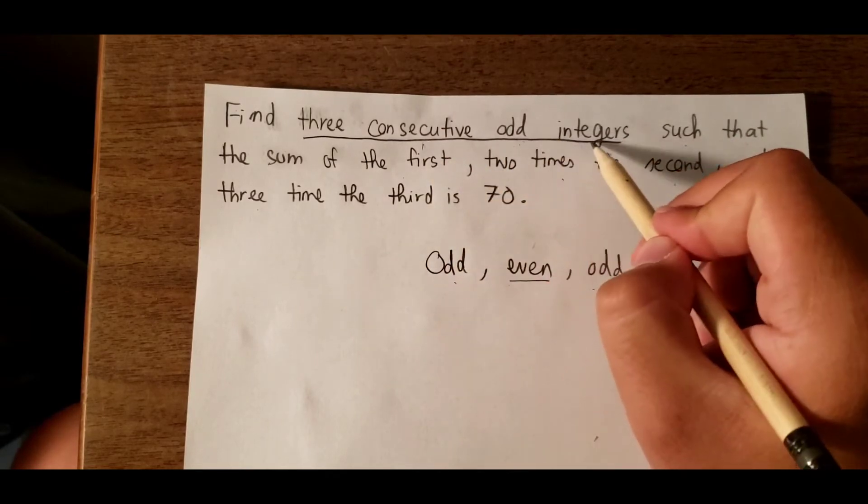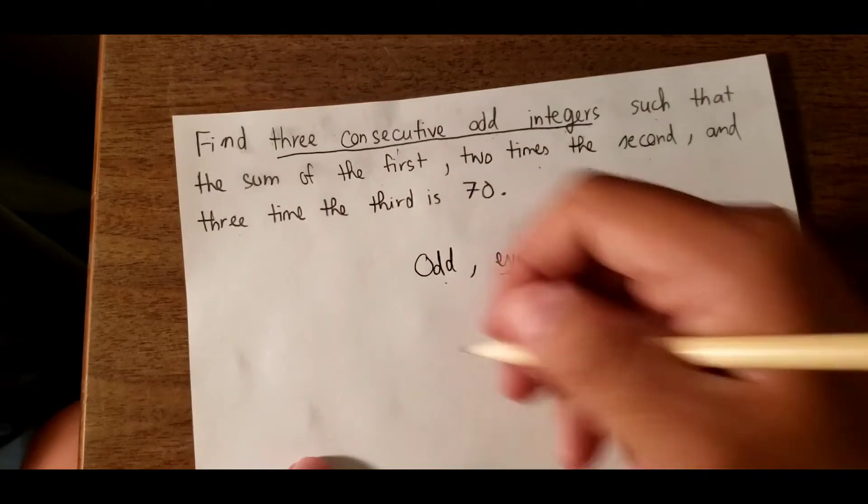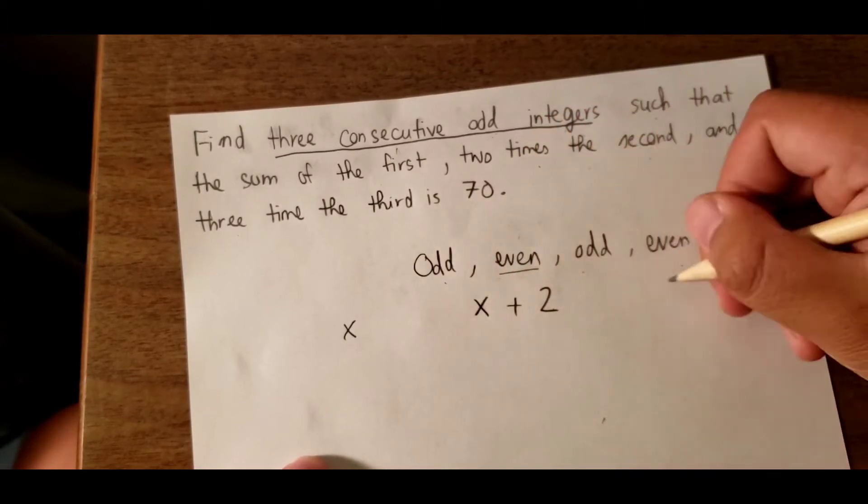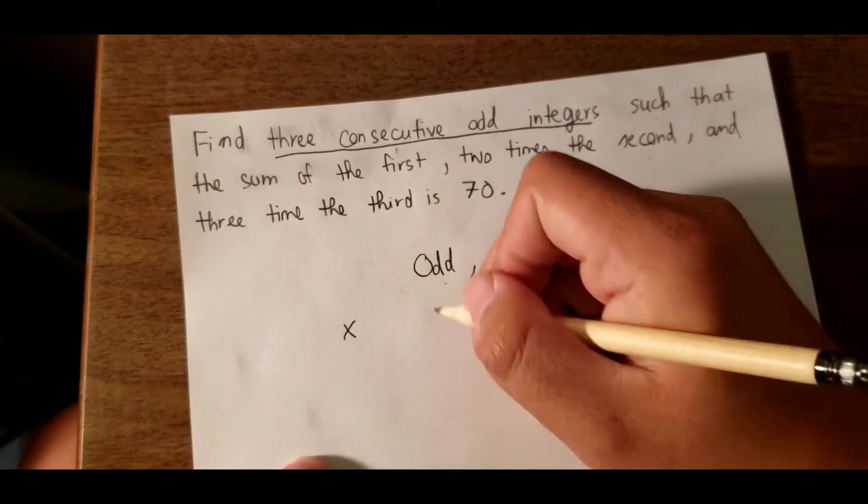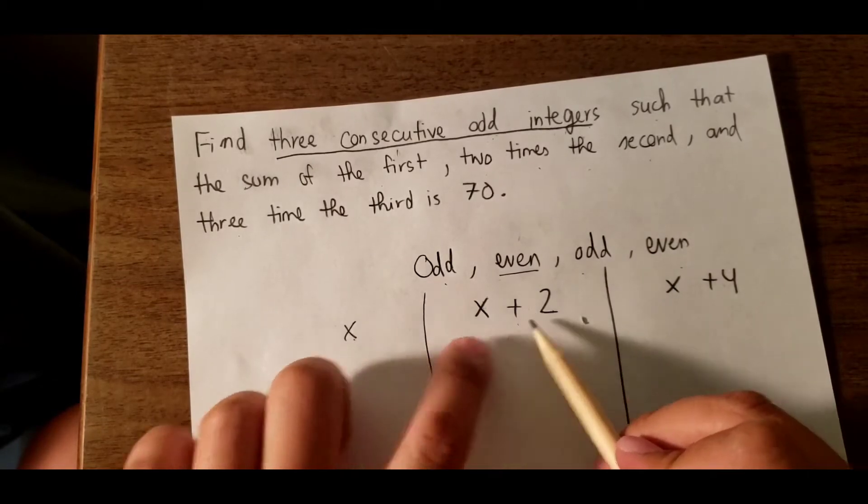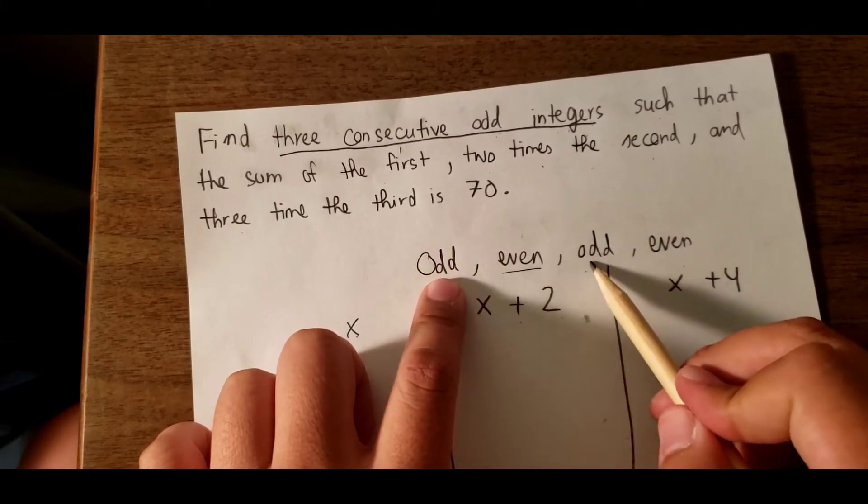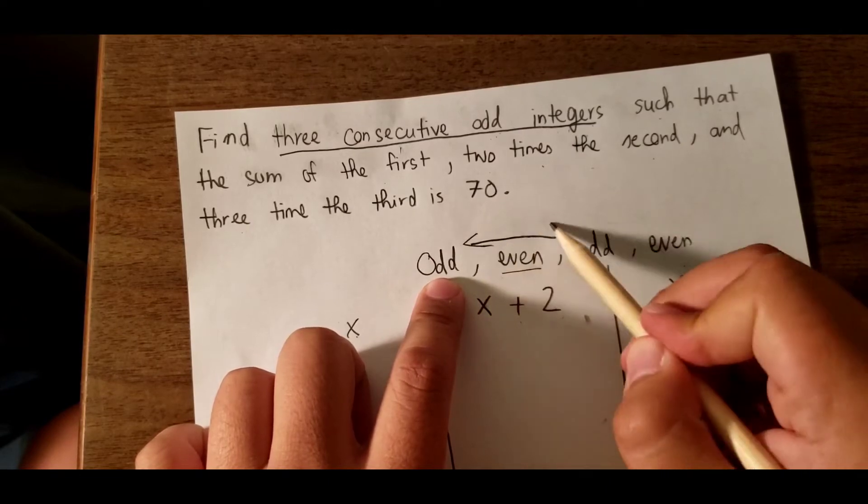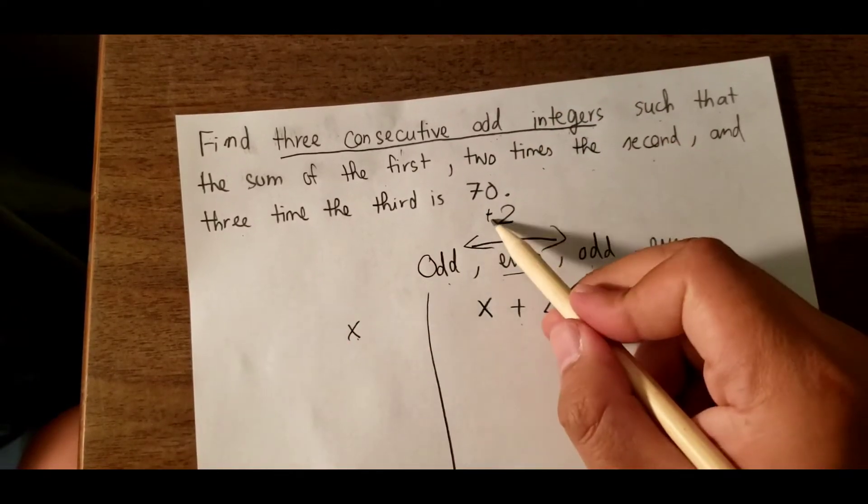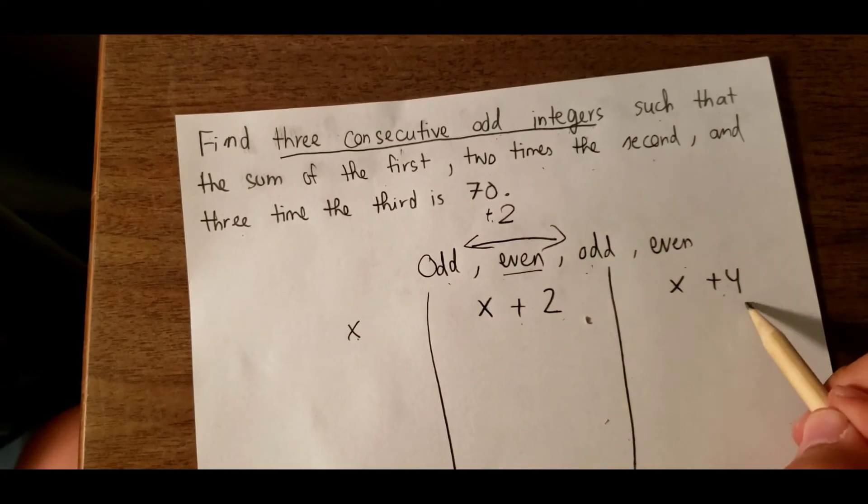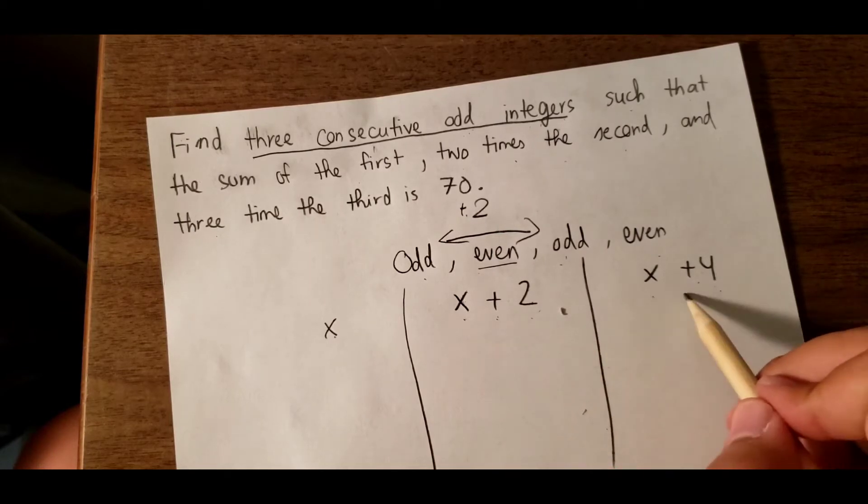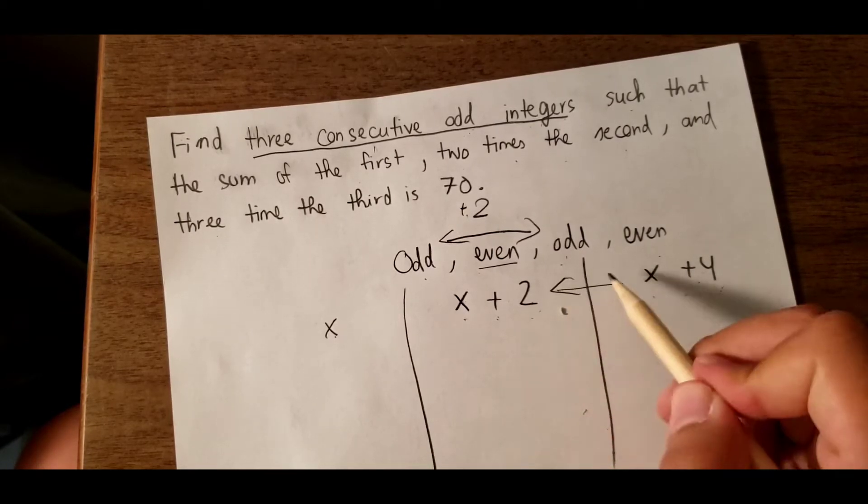It means we have three integers. We can write them as x, and x plus 2, because they have a difference between them of 2. And the third one is x plus 4, so we have x, x plus 2, and x plus 4 with a difference of 2 between each.